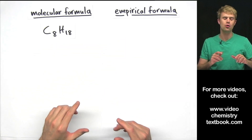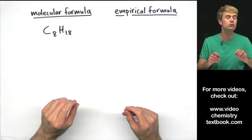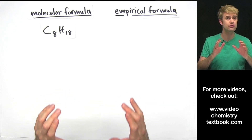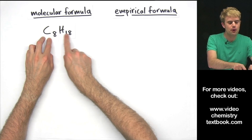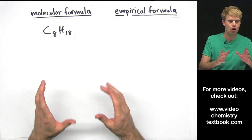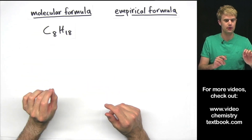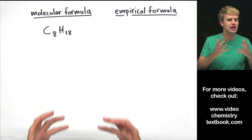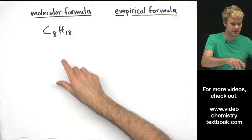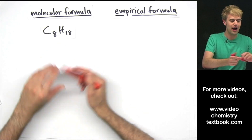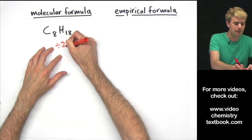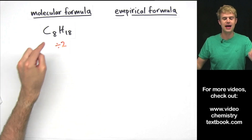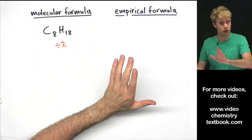To write the empirical formula, we do kind of the same thing that we do when we have a fraction and we want to get it into its simplest or most reduced form. We look at both of these numbers, 8 and 18, and we ask: what is the biggest number that we can divide both of these by to get them as reduced as possible? In this case, we can divide both 8 and 18 by 2 — they're both divisible by 2. Dividing both of these by 2 is exactly what we'll do to get the empirical formula.